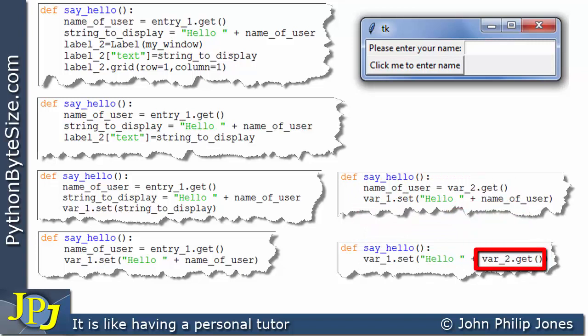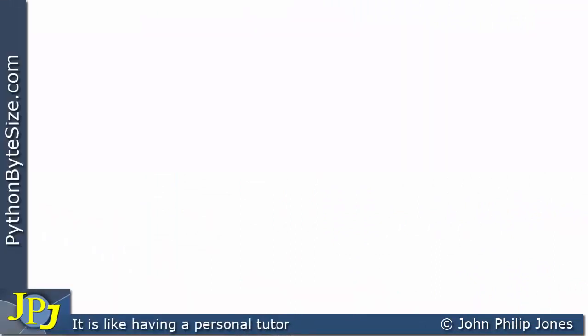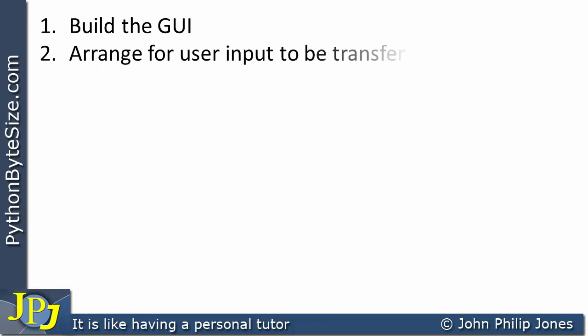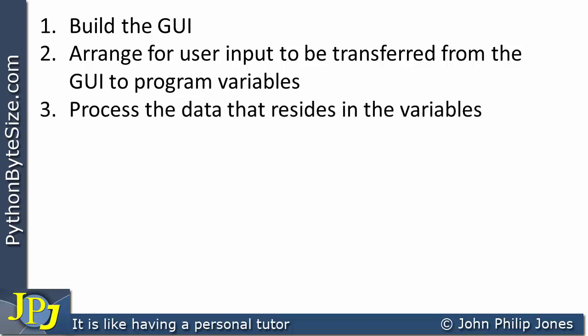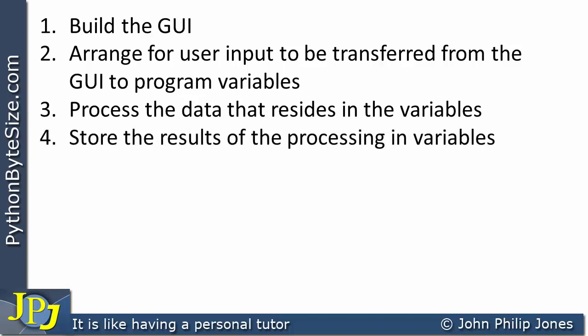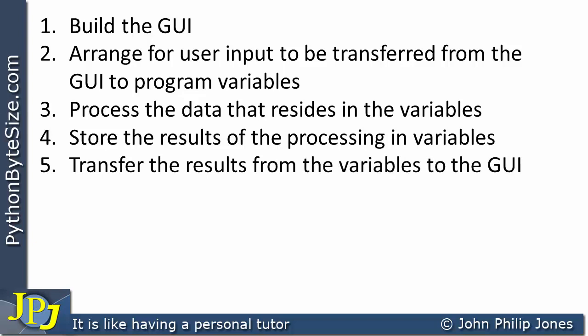We went on to show it all on one line of code, where the intermediate variable line was removed and placed directly inside the set call. I'm not recommending any of these approaches — I'm just showing different ways of doing effectively the same thing. When you read other people's code you'll see them doing things different ways. It's important when learning to realize there are all these different ways to do the same thing. Although I'm not making recommendations, I think you should consider the following five steps: first, build the graphical user interface; second, arrange for user inputs to be transferred from the GUI to program variables; third, process the data in the variables.